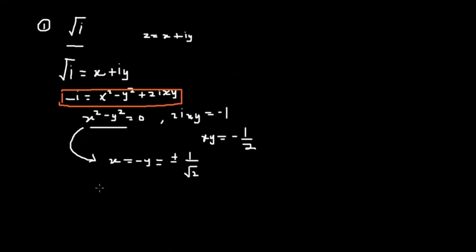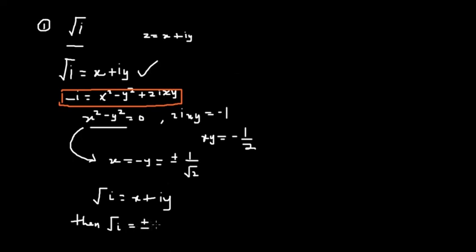Since we know that √i is equal to x + iy, we can also state that the roots of i can be equal to plus or minus — that is, positive 1 over root 2, minus 1 over root 2 times i. Note that we are assuming from here: root of i equals x + iy.